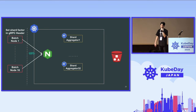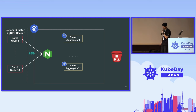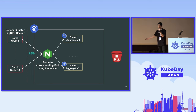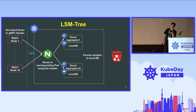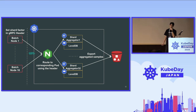Let's look at how it works. First, the batch server calculates which shard is responsible for a given request. Then the batch server puts the shard factor in the gRPC header and sends the data to NGINX. NGINX routes the data to the corresponding pod using the gRPC header calculated by the batch server. Then the shard aggregator persists the data in local DB — an LSM tree-based database, specifically LevelDB — and once all shard data is aggregated, it saves the data to object storage.